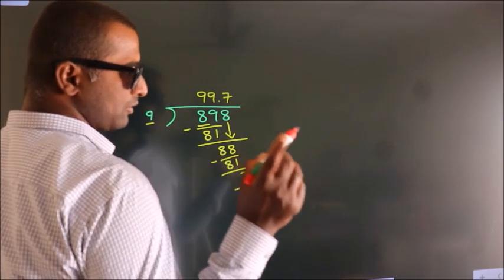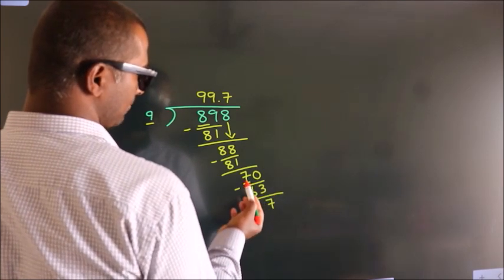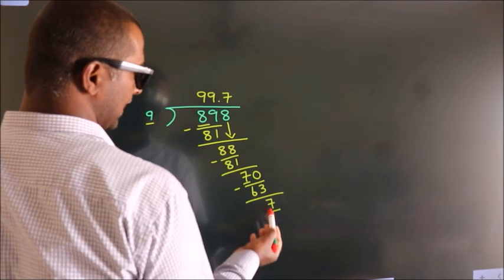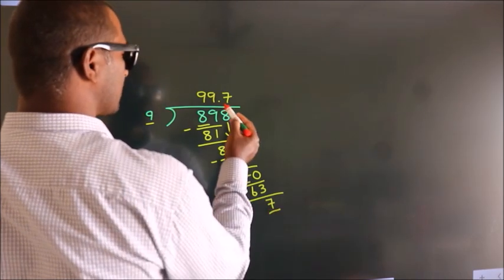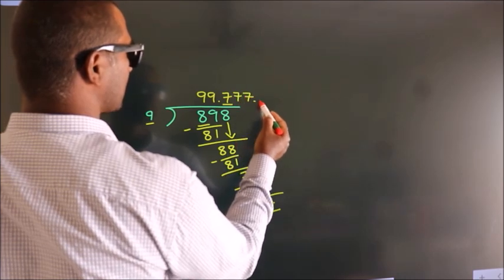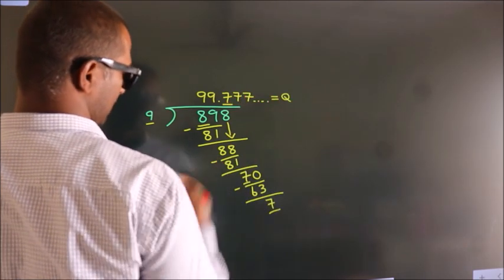Now you observe, we had 7 here, and we got 7 again. That means this number keeps on repeating. So this is our quotient. All right?